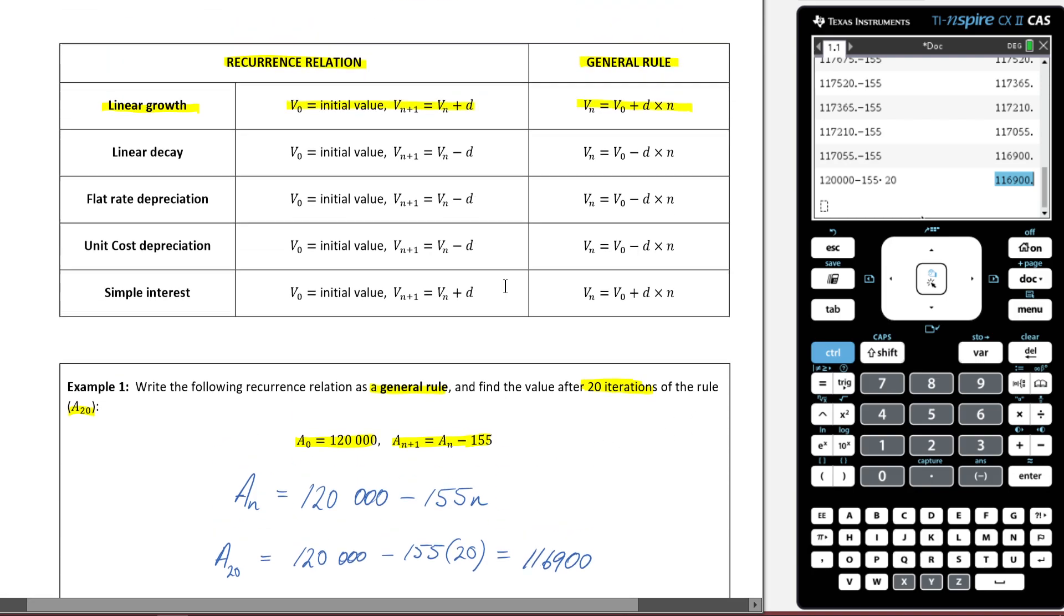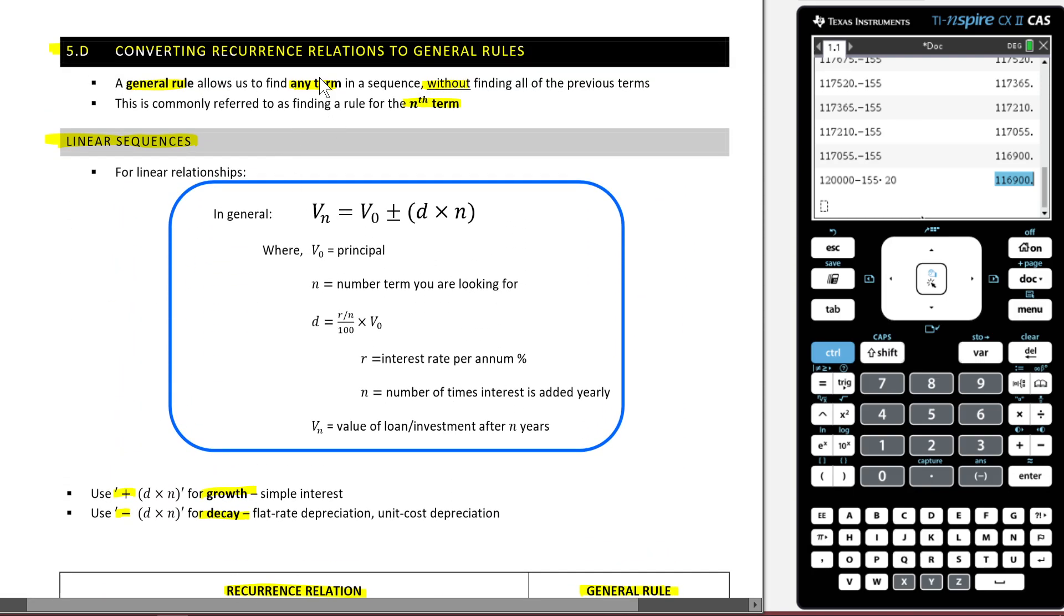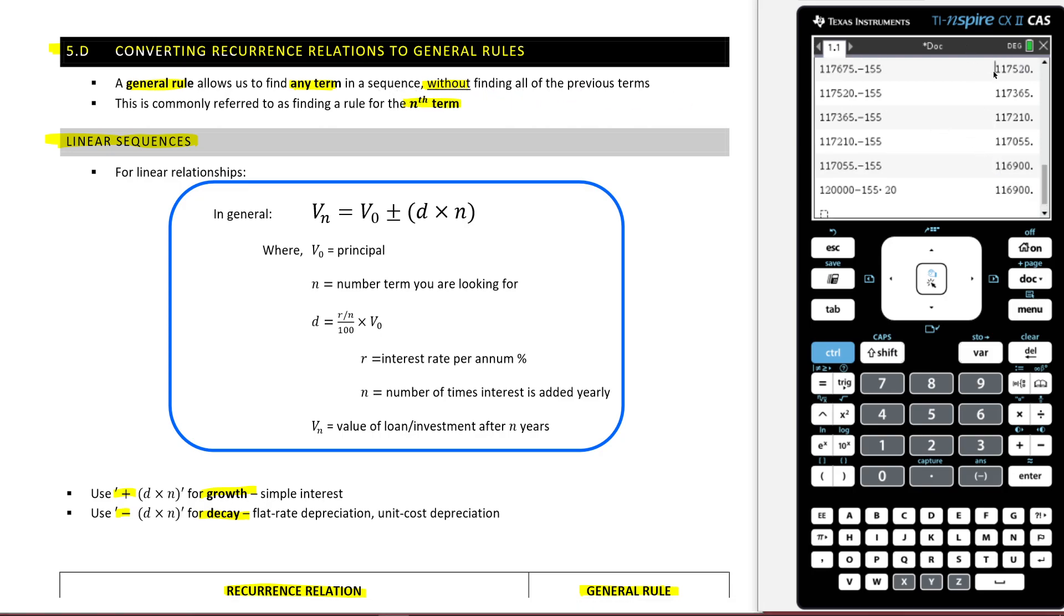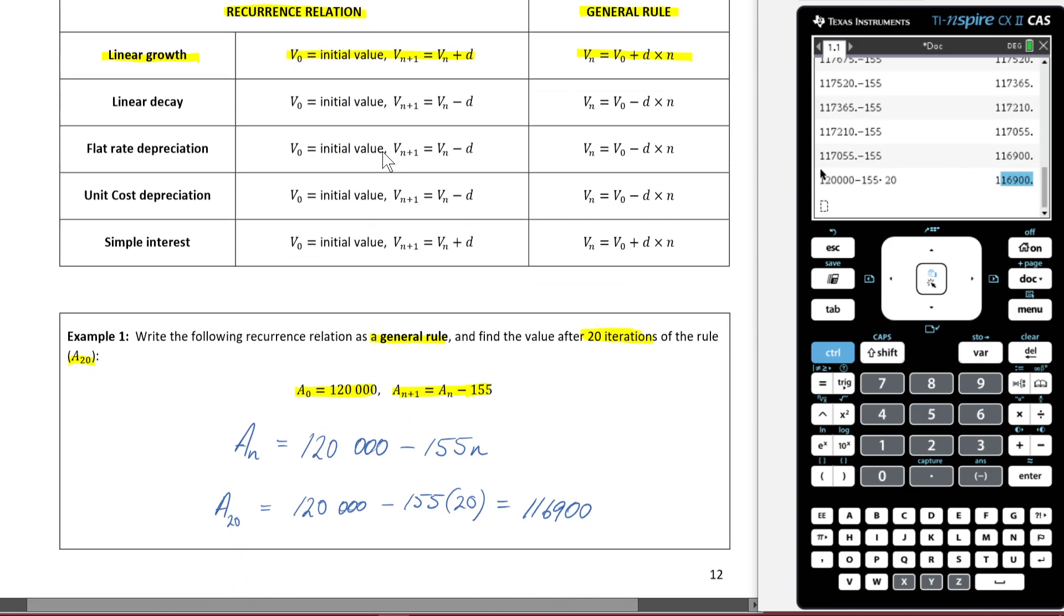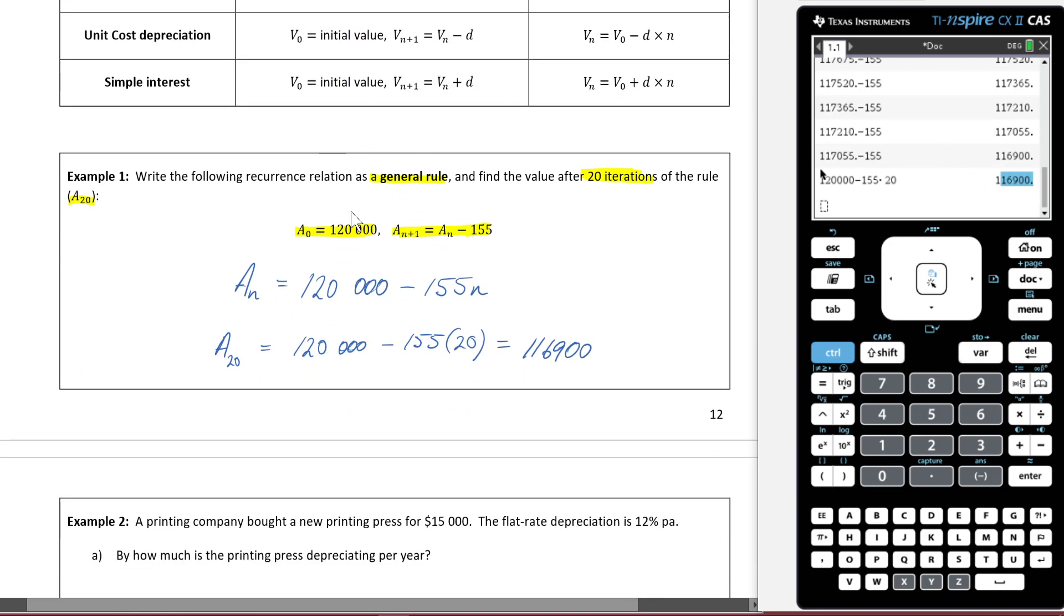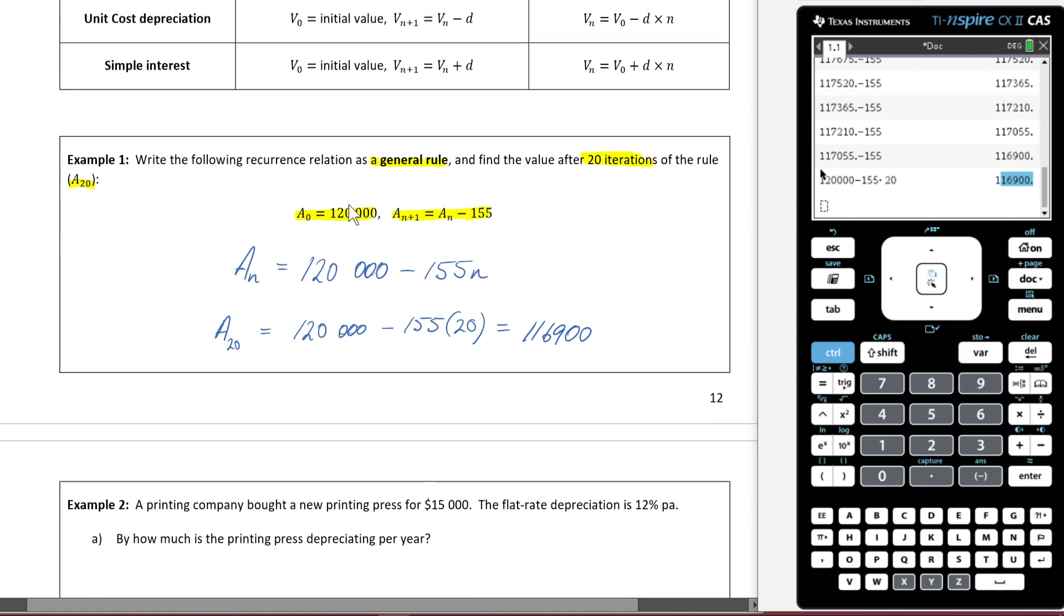So it's really important that you understand what it is that we're doing here and why we do it. We're doing it because we can, as we're told up here, find any term in a sequence without finding all the previous terms. As you can see here, we found all the previous terms here. But now we don't have to do that. We can just go straight in for our answer. All right, that is an introduction to the general rule. We're now going to go through a few more examples.